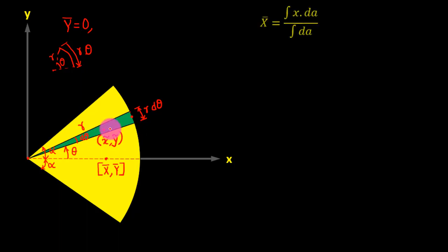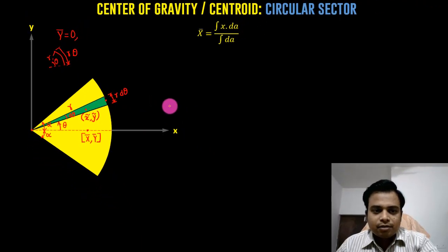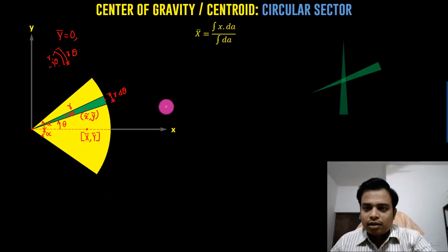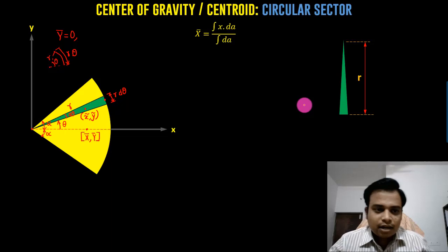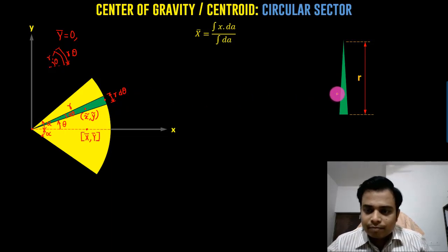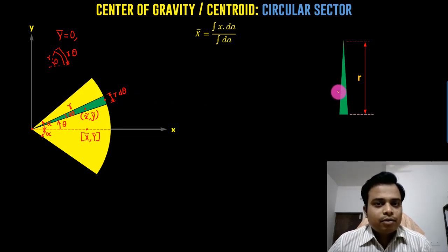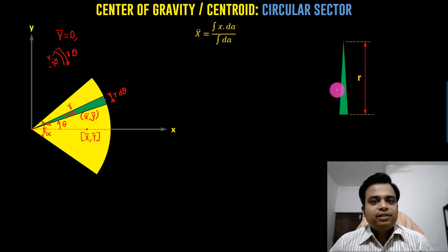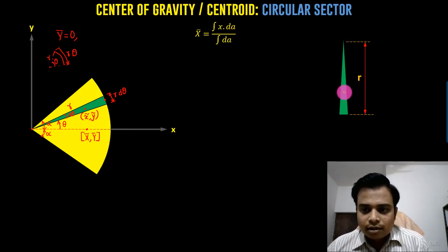Let me do a separate analysis. Let me shift this triangular strip somewhere here and rotate this. If you've seen my first video where I taught you how to find the centroid of a triangle, you must have seen that for a triangle, the centroid is at a height of one third of the height. So the height is radius r, so this has got to be r by 3.